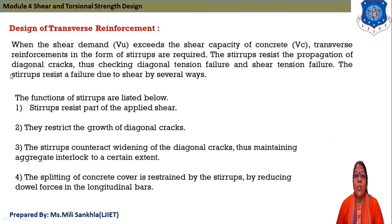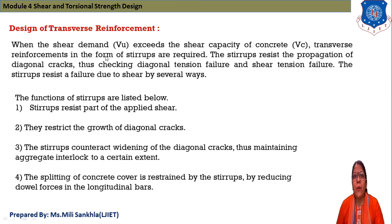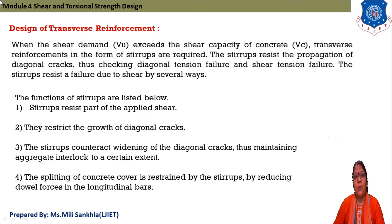When shear demand Vu exceeds the shear capacity of concrete VC, transverse reinforcement in the form of vertical stirrups is required. Stirrups resist the propagation of diagonal cracks. The main purpose of providing shear reinforcement is to prevent diagonal cracks induced in the beam, thereby checking diagonal tension failure and shear tension failure.